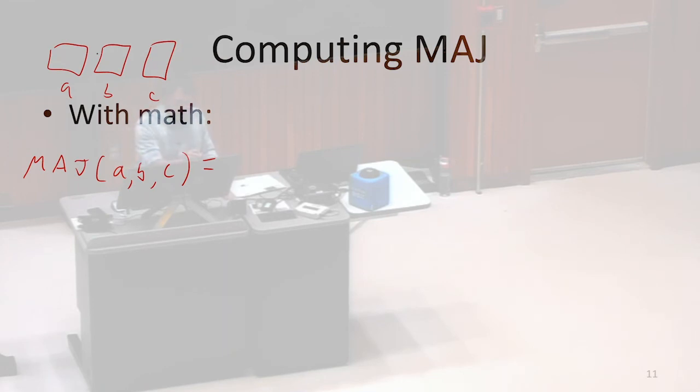So what we can do is we can say, are A and B both 1? How can we check if A and B are both 1? And, yeah. So I can say, I can do and on A with B.